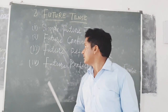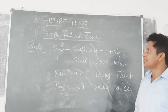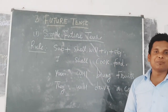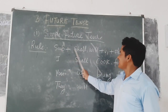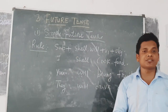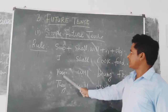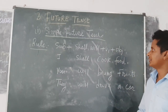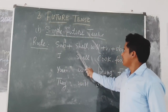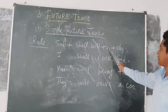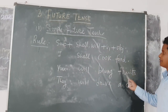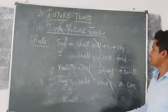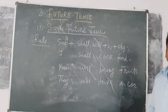Let us deal with them one by one. First one is simple future tense. The rule is: subject plus shall/will plus verb plus object. Examples are: I shall cook food — subject is I, with I shall is used, verb is cook, and object is food. Other examples: you will bring fruits, they will drive a car.